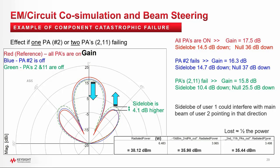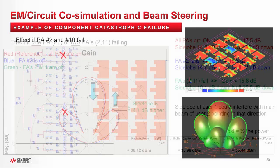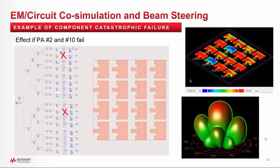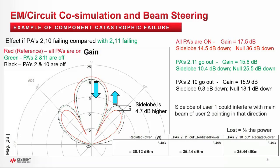Here the main beam lost gain and power, but the side lobes moved in the opposite direction and gained power. What is even more interesting is if I turn off PAs 2 and 10 instead of 2 and 11, the results are shown in black color. The side lobes are even worse than the PAs 2 and 11 case. In the green color case, when PAs 2 and 11 were off, the side lobe went up by 4.1 dB. But in the black color case, when PAs 2 and 10 are off, the side lobes went up even more by 4.7 dB. So depending on which PAs fail may result in a worse beam profile and higher side lobes.